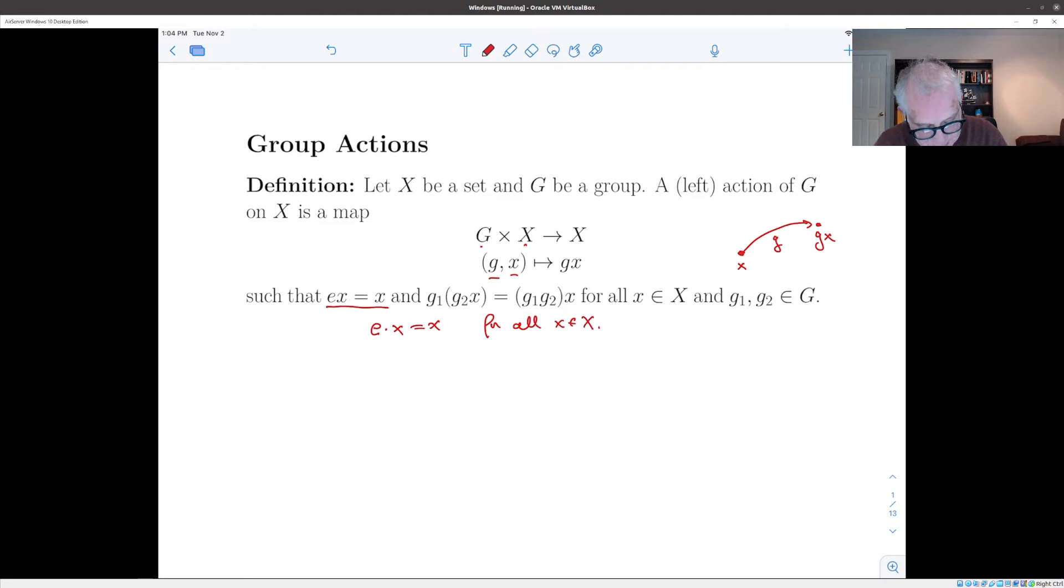And the other property is that if you take an element x and you first do g1 to it and then you do g2 to that, that's the same as multiplying g2 and g1 together and applying that to x. So if here's your point x and you do g1 to get it to g1 x and then you do g2 to get it to g2 g1 x, you could have instead gone straight there by applying g2 g1 to x. And that's it. Those are the properties.